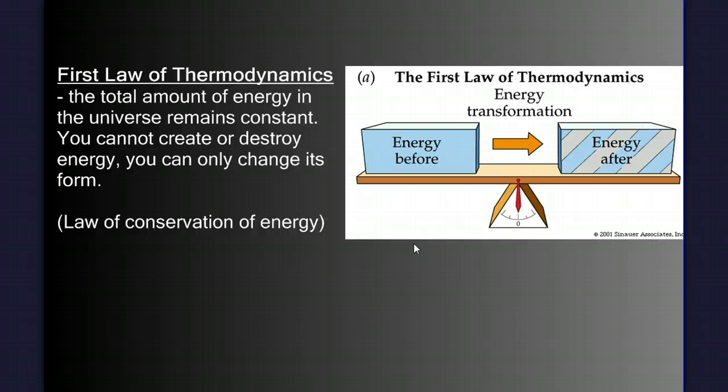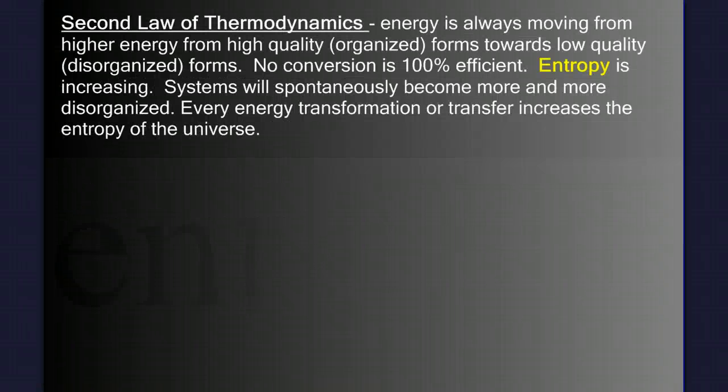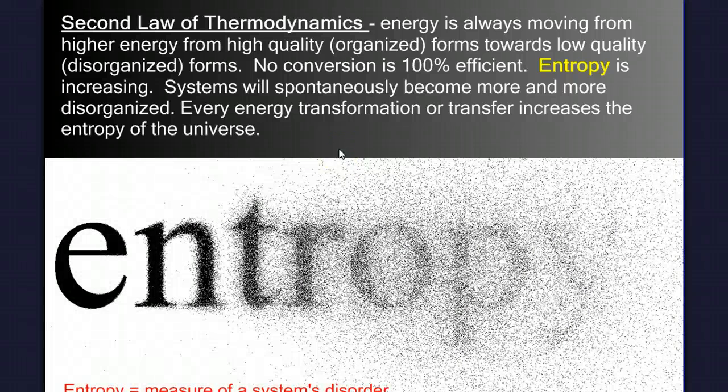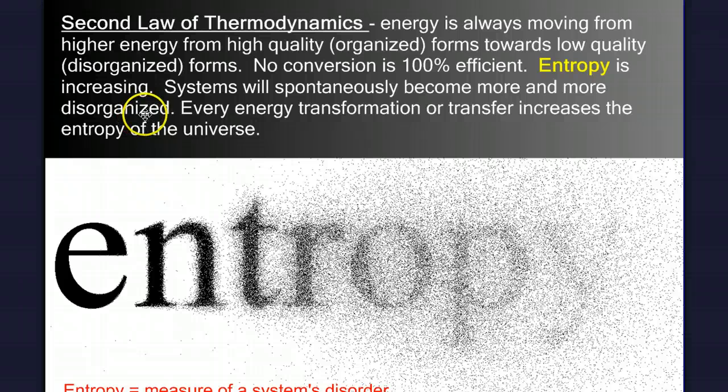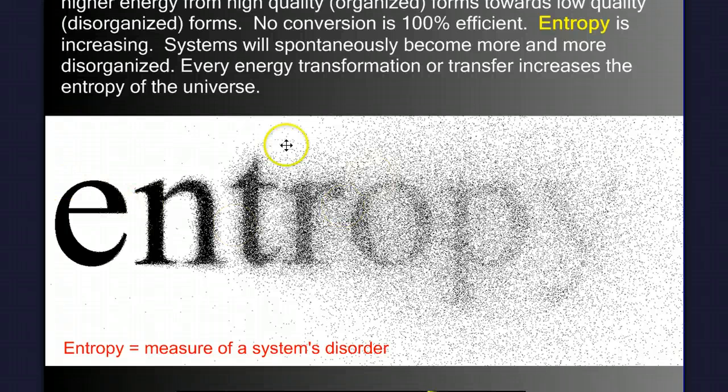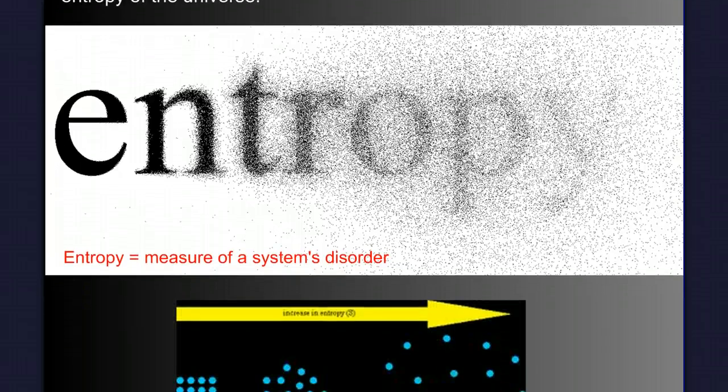And that's going to govern kind of how we watch how energy flows through systems. And the second law of thermodynamics explains the natural progression of energy states. It says that energy is always moving from higher energy quality forms, or higher quality energy forms, to lower quality forms. A low quality form of energy would be something like heat. And that no conversion is 100% efficient. That entropy is always increasing. A system will spontaneously become more and more disorganized. Every energy transformation or transfer increases the entropy of the universe. So entropy is the measure of a system's disorder. And it's always increasing, or its natural tendency is to increase.